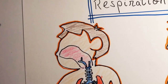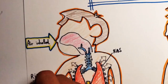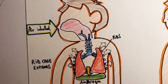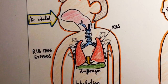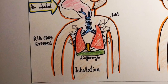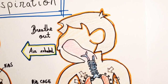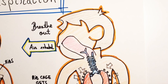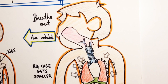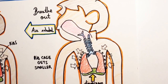When we inhale air, the ribcage expands as the rib muscles contract, then the diaphragm contracts and it moves down. When we exhale air, the ribcage gets smaller and the rib muscles relax. This is called exhalation, and the diaphragm relaxes, so it moves up.